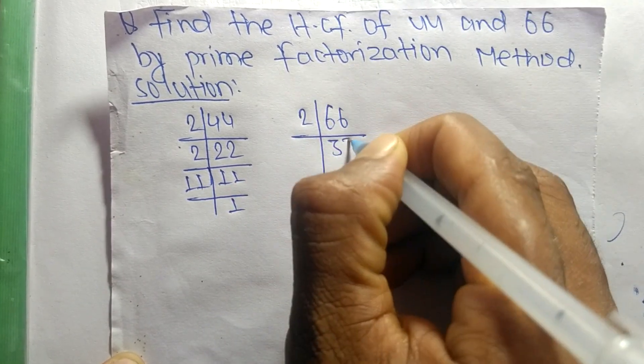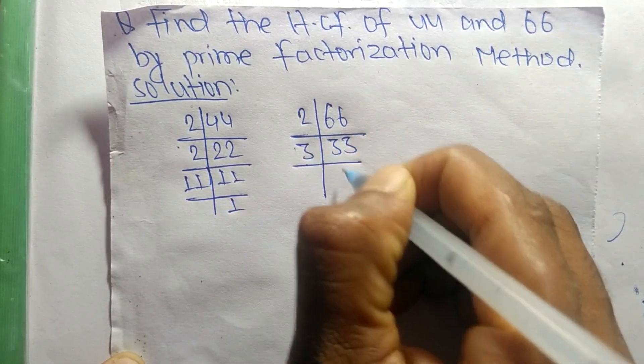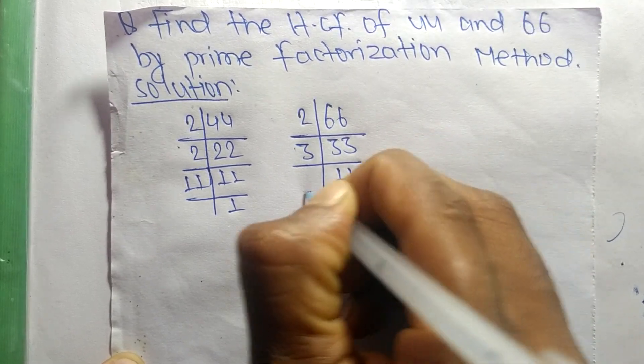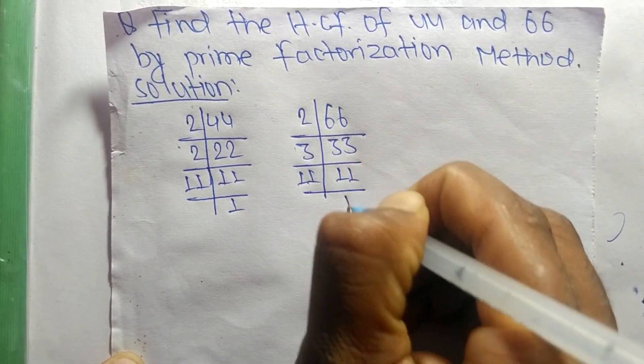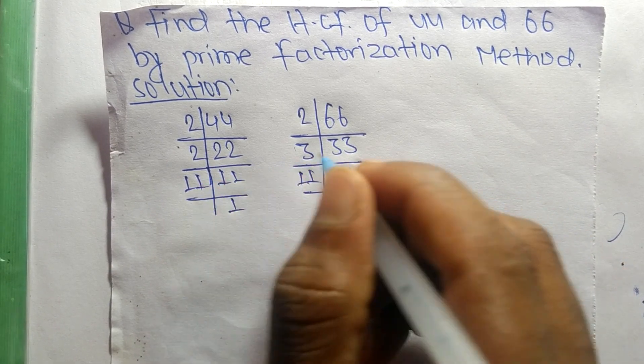...2 times 33 equals 66, 3 times 11 equals 33, and 11 times 1 equals 11.